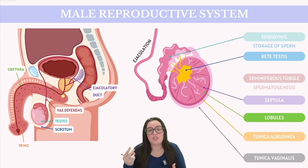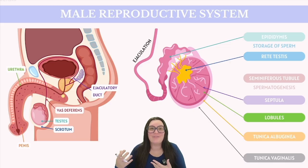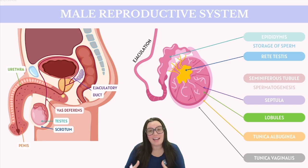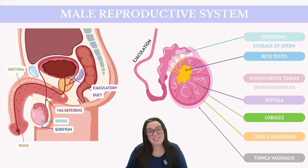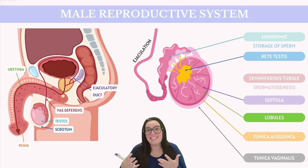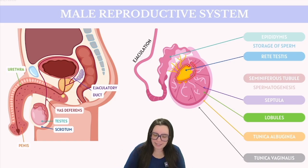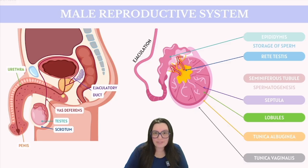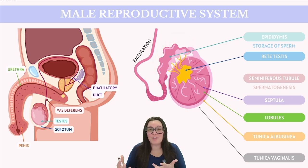Each testis is encased in two layers: the inner tunica albuginea and the outer tunica vaginalis. Internally, the testes are segmented into lobules, and these lobules house tightly coiled seminiferous tubules. Sperm production from spermatogenic cells occurs inside these tubules through a process known as spermatogenesis. These seminiferous tubules eventually merge into a straight tubule leading to the rete testis. From there, sperm travels up through a network of ducts until it reaches the epididymis, where sperm are stored and mature until expelled during ejaculation.